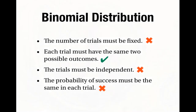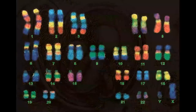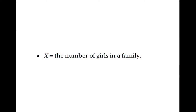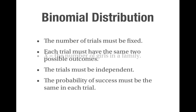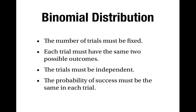My next example is to do with children — in particular, whether they're boys or girls. Suppose you're interested in the number of girls in a family. The first criterion doesn't apply: the number of trials isn't fixed because different families have different numbers of children. It is true that each trial has the same two possible outcomes because each child is either a girl or not. The third criterion — are the trials independent — asks whether the probability that a child is a girl depends on whether previously born siblings were boys or girls.